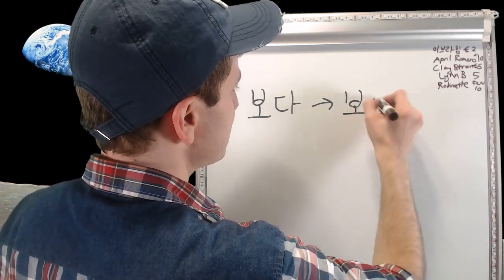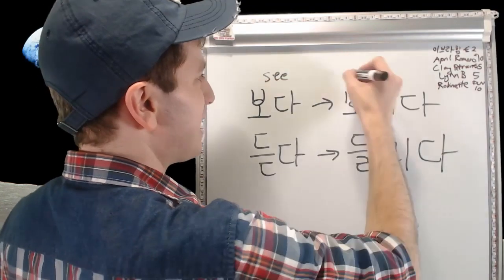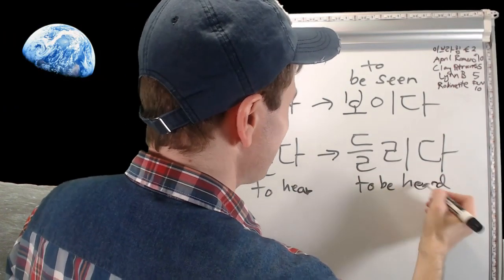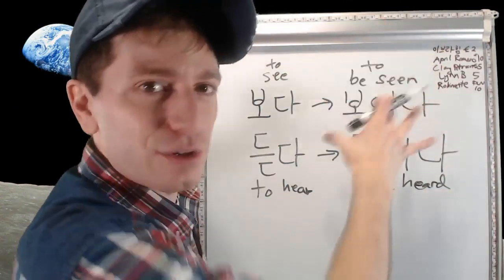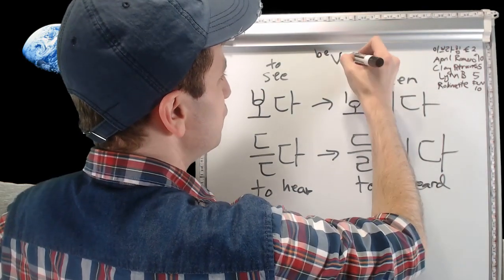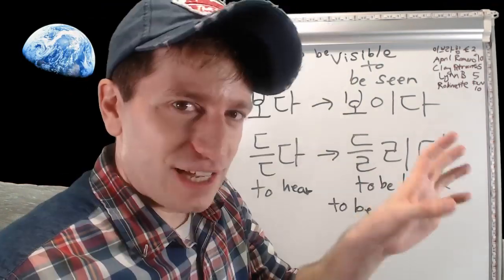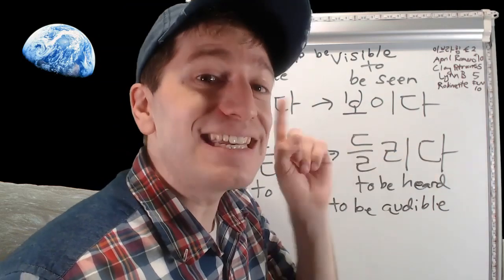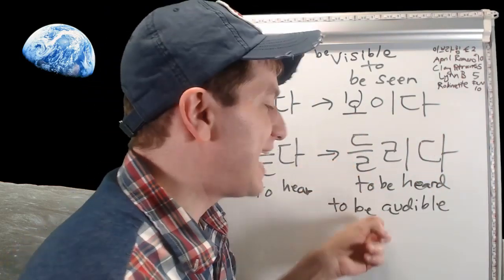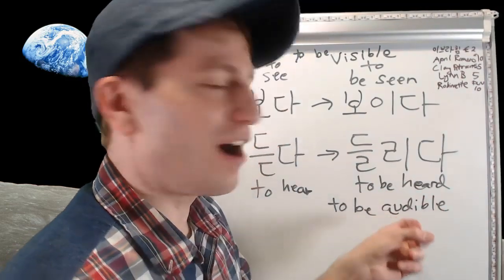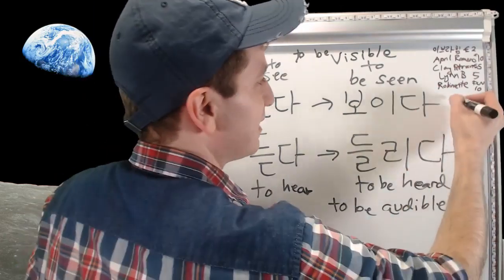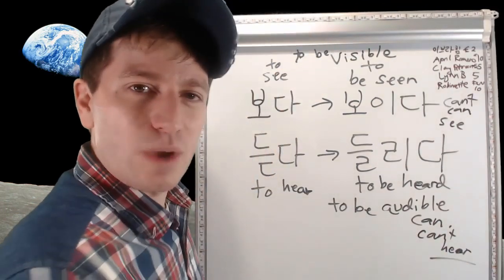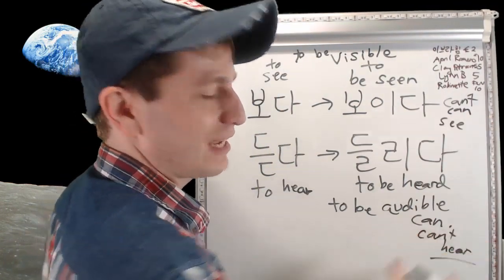Some of the most common passive verbs are 보이다 (to be seen, from 보다 to see) and 들리다 (to be heard, from 듣다 to hear). Think of them as meaning 'to be visible' and 'to be audible.' These verbs are used to express whether you can or can't see or hear something in Korean.